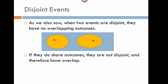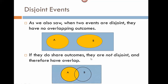If they do share outcomes and are not disjoint, then they overlap. For example, we saw picking a single card from a deck — what's the probability that it was a king or a heart? The king of hearts means we satisfied both events at the same time.